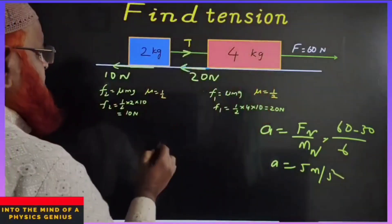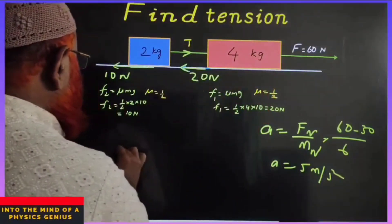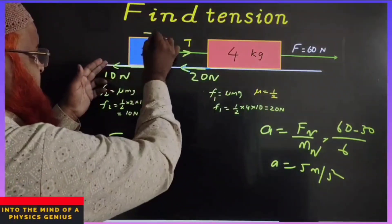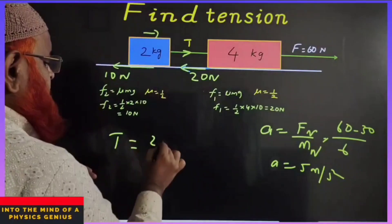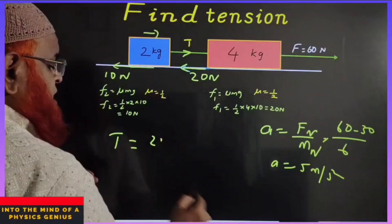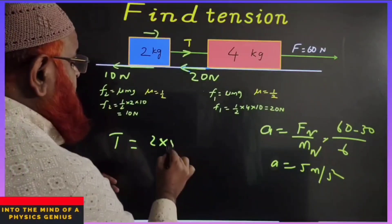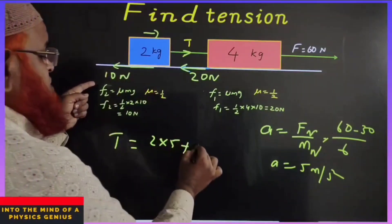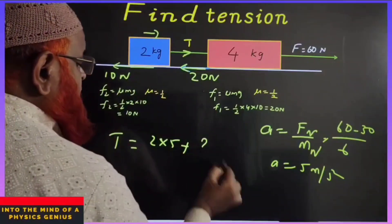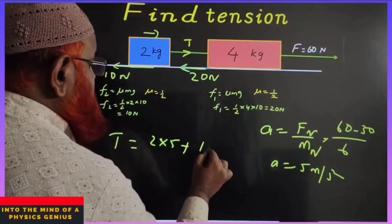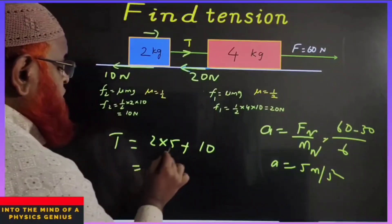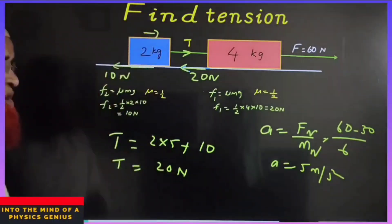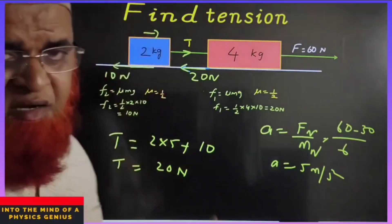To find the tension, take the 2kg block: tension equals mass into acceleration plus friction. That is 2×5 = 10, plus friction of 10, so tension equals 20 newtons.